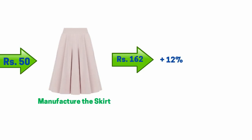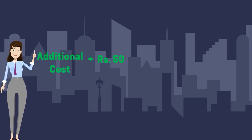In the next stage — wholesale — an additional cost including margin of 50 rupees is added to the skirt. The total becomes 231 rupees and 44 paise. Adding a tax of 12%, the total cost here comes to 259 rupees and 20 paise.